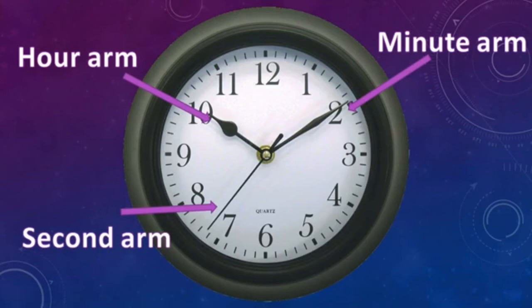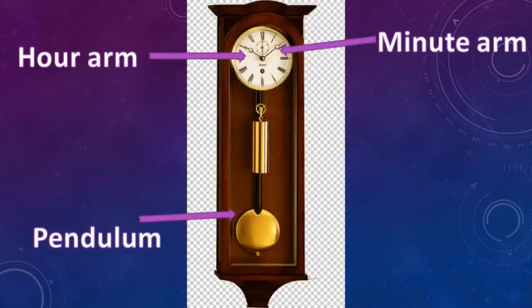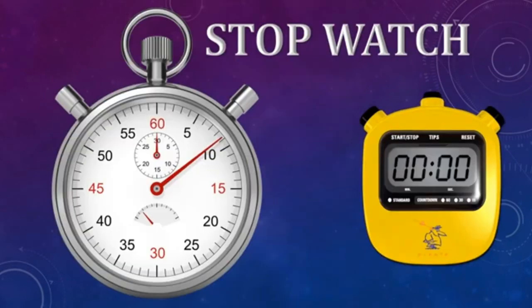The second hand completes one rotation in one minute, the minute hand completes one rotation in one hour, and the hour hand completes two full rotations in one day. In a pendulum clock, two arms are present — the hour arm and minute arm — and the pendulum acts as the second arm. The stopwatch is generally used in the field of sports. When athletes run 100 m, 200 m, 400 m, or any other race, the stopwatch is used to record the exact time taken to cover the distance.